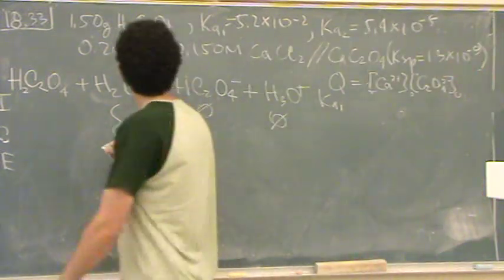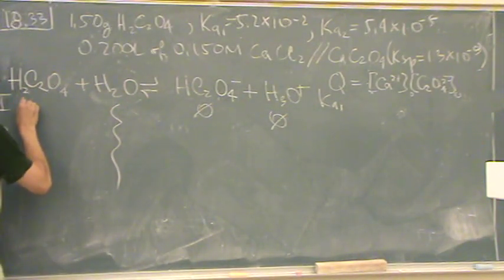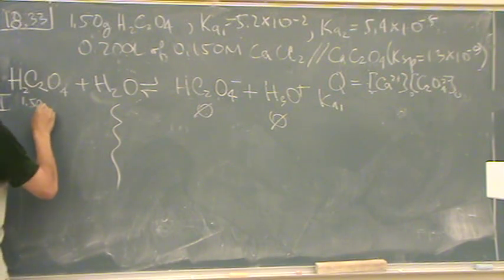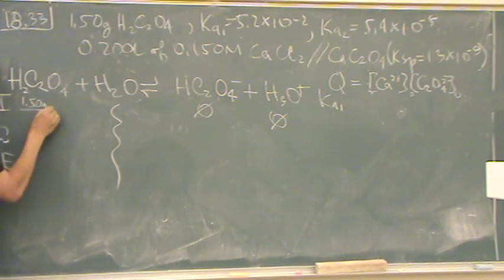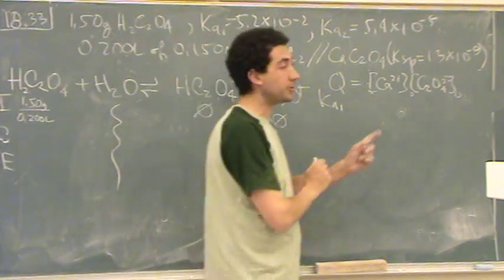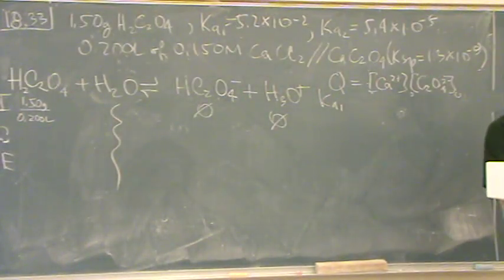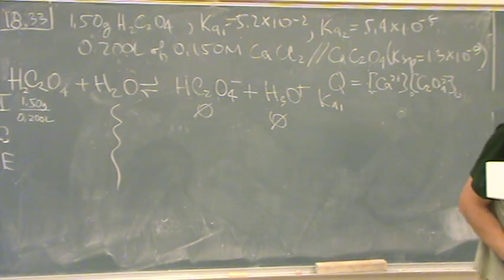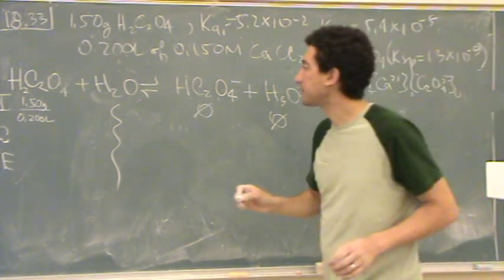So I'm going to write it really tiny here: grams divided by 0.200 liters. But we don't want grams per liter, we want moles per liter so you have molarity. So you have to go over, use your periodic table and find the molar mass. They give it here in the solutions, it's 90.04 grams per mole.